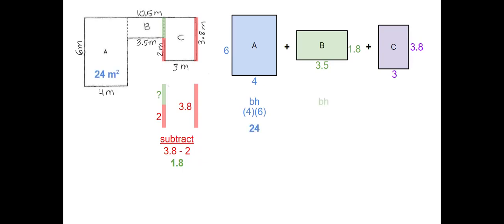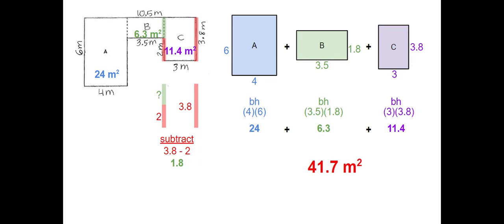For B, it is another rectangle, so base times height again, and it's 3.5 times 1.8. Type that into your calculator and you get 6.3. And C is another rectangle, so base times height, which is 3 times 3.8. Type that into your calculator and you get 11.4. Make sure you bring your signs down — plus. I'm going to add the area of A, 24, plus the area of B, 6.3, plus the area of C, 11.4. Add all those together and you get 41.7 meters squared because each of these was in meters.